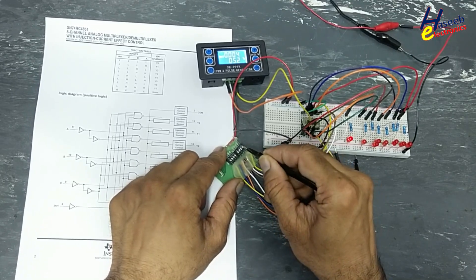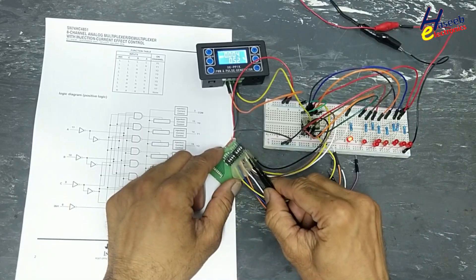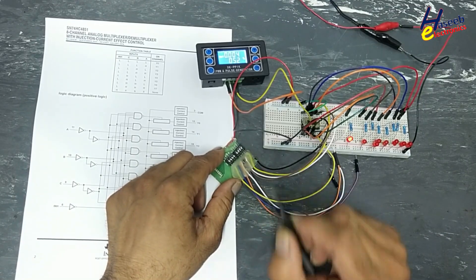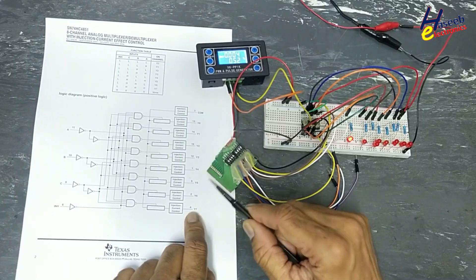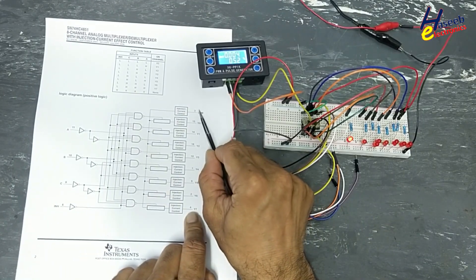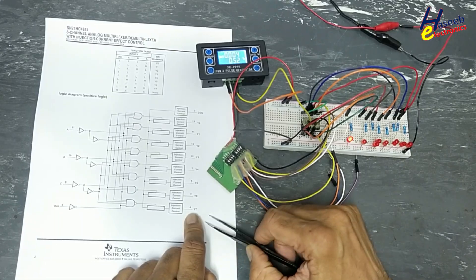BCD six. This one. Triple one: one one one. Last output is activated. Signal at pin number three is now reaching pin number four.